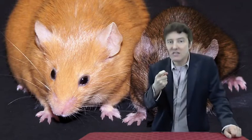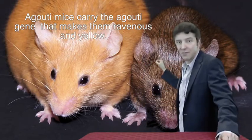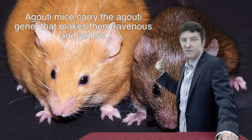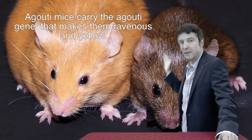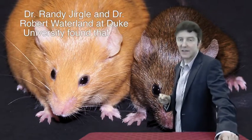So-called because they carry a particular gene, the Agouti gene, that makes the rodents ravenous and yellow. Back in 2000, Randy Jirtle, who was a professor at Duke University, and his postdoctoral student, Robert Waterland, set about to see if they could change the unfortunate genetic legacy of these little creatures.